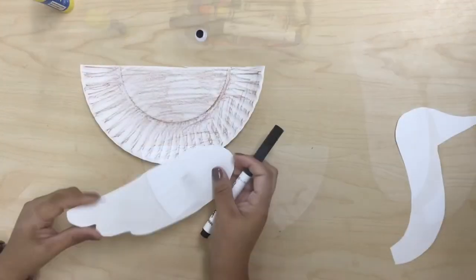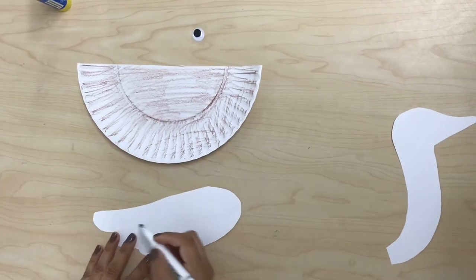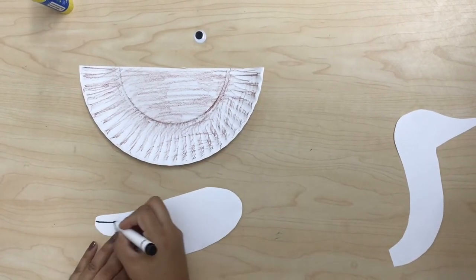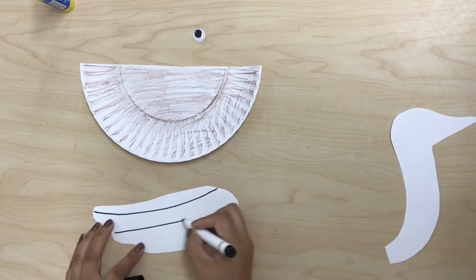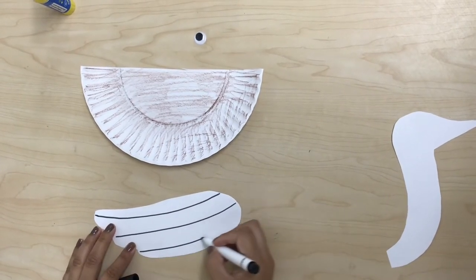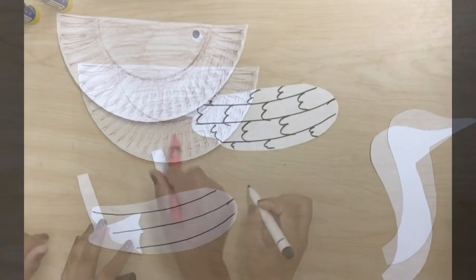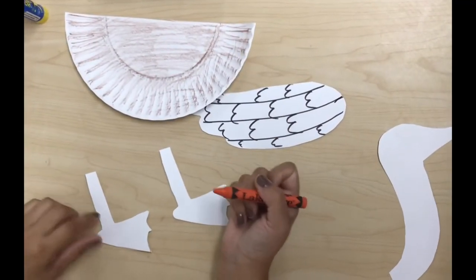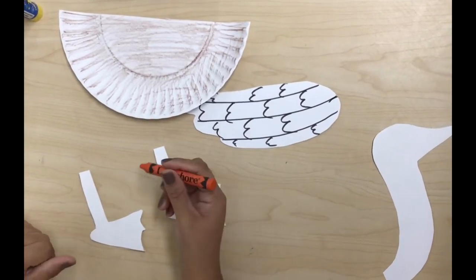We're going to color the wing. I'm going to use black. After coloring our body and the wing, we're going to color the legs using orange.